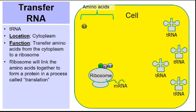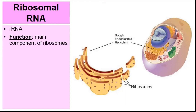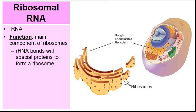And now for transfer RNA. The T stands for transfer — transfer RNA. And the location is going to be in the cytoplasm. The ribosome is going to gather amino acids to make a protein, but how does the ribosome actually obtain the amino acids? Transfer RNA will pick them up and carry the amino acids over to the ribosome. So when a ribosome is making a protein, it needs the help of transfer RNA.